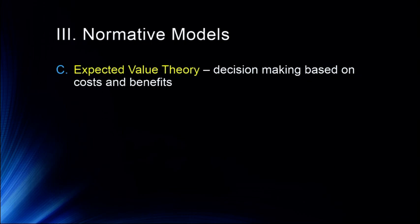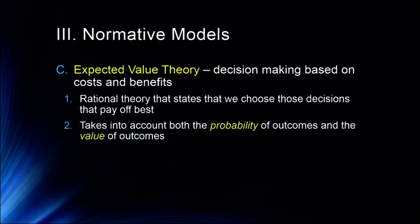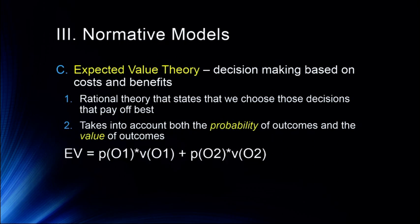One of the first versions of normative models is expected value theory — decision-making based solely on calculation of costs and benefits. It's a rational theory stating that we choose the decisions that pay off best. It takes into account both the probability and the value of an outcome. In the simplest two-outcome scenario, you take the probability of outcome one multiplied by its value, and add that to the probability of outcome two multiplied by its value.